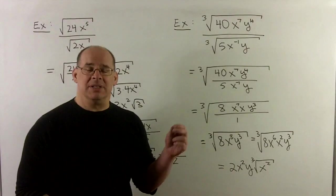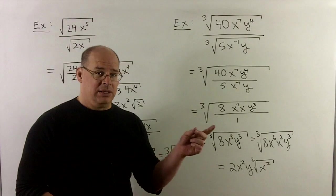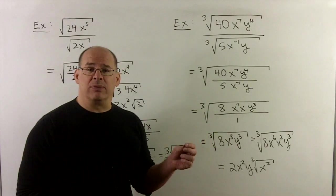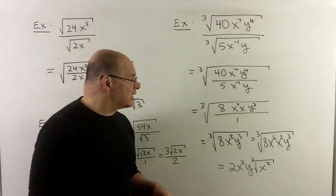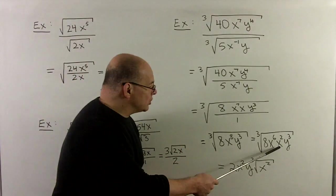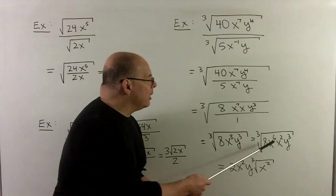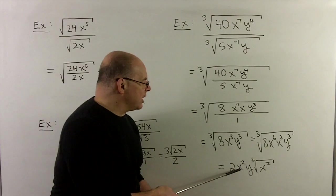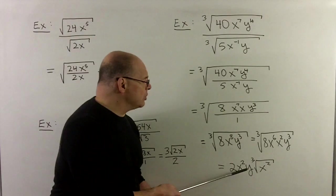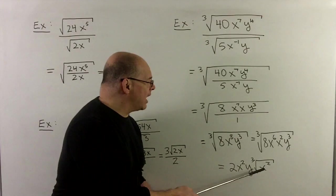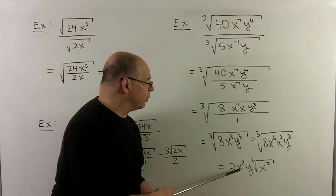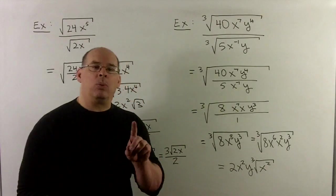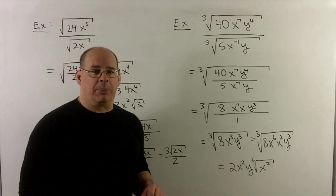8 over 3 is not a whole number. 7 over 3 isn't, but 6 over 3 is. So I want to use the 6, and that's going to leave me with an x². I pull out my cubes, so 8 goes to 2, x⁶ goes to x², y³ goes to y, and then we're left with an x² inside of the cube root. So that one, that takes a little bit of practice. So that's how we push.